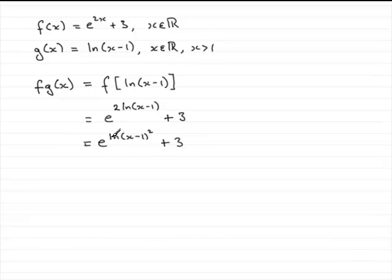Now, e to a natural log, these are kind of self-inverses of one another. So what you end up with here is x minus 1 all squared plus 3.